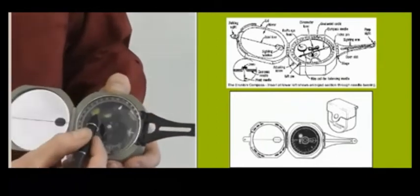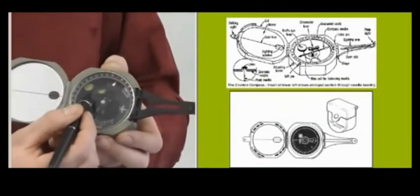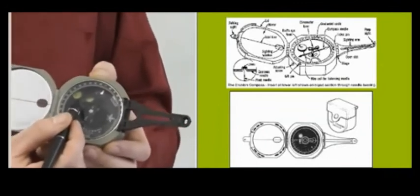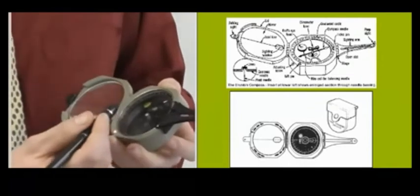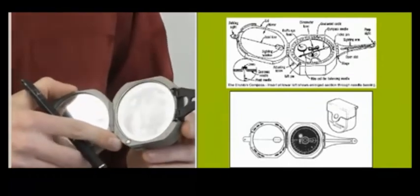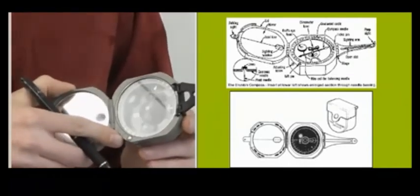Now, there's two levels that you'll notice are inside the compass. One of them is cylindrical and the other one is circular. If you are using the clinometer, which we'll go over shortly, you're going to use the cylindrical one.